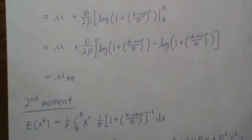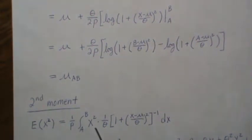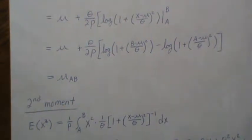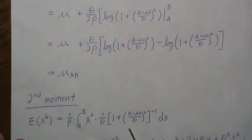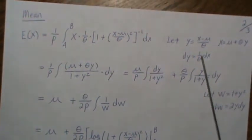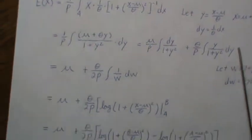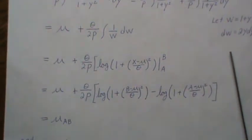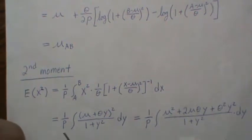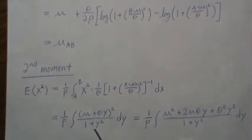So now let's look at the second moment, which means put X squared in here times the density, evaluate it over all possible values. We make the same substitutions. We're going to let Y equal this value, derivative back solve, and we get this.